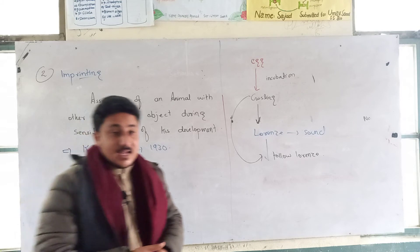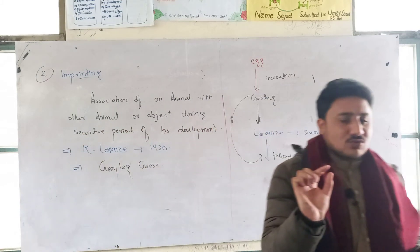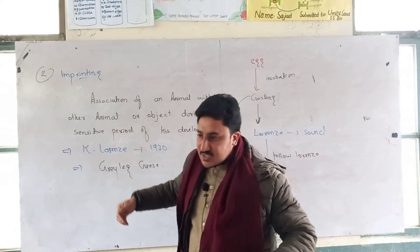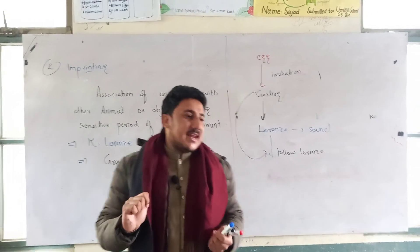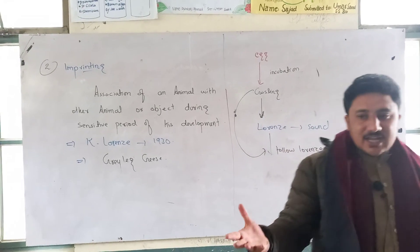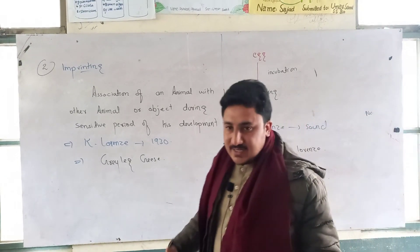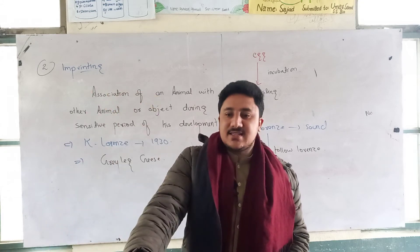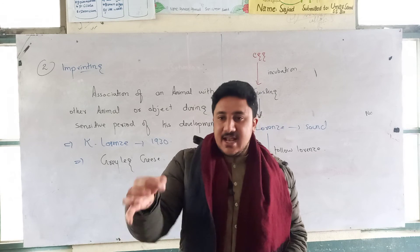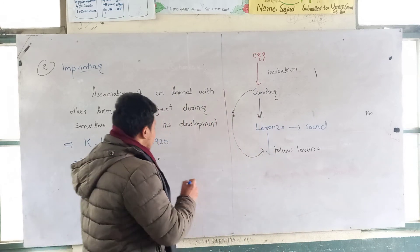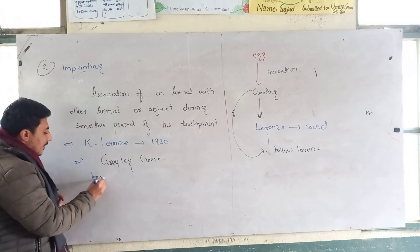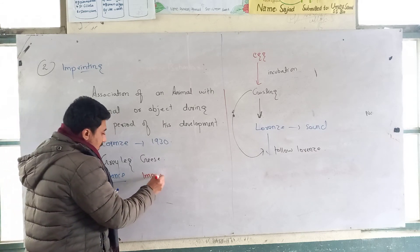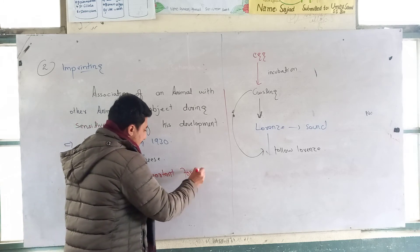Imprinting is not the most important thing in general, but it occurs during the critical or sensitive period of time. If an animal forms an association with a human being during this period, imprinting occurs. Imprinting is very necessary for the survival of young ones.